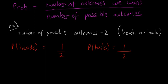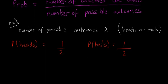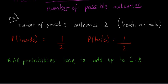An important check we can do to make sure we're right: all of the probabilities have to add up to one. In this case the two possible outcomes are heads or tails, both with probability one half. Half plus half equals one, so we know we're right. This check is especially useful when there are more possible outcomes.